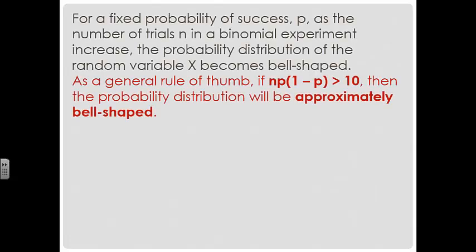For a fixed probability of success P, as the number of trials increases, the distribution becomes more and more bell-shaped. A useful rule of thumb: if N·P·(1-P) — the expression under the radical in the standard deviation formula — is greater than 10, then the probability distribution will be approximately bell-shaped. This will be important later.